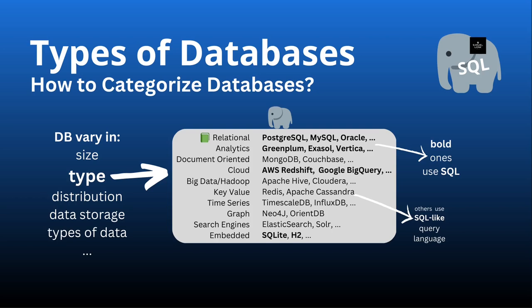What's more important to you at the moment — because this classification can obviously vary depending on who you ask — is that the ones in bold letters here are examples of databases that use SQL, which you are going to learn in this course. Some others, like Apache Cassandra, use SQL-like query languages. Because relational databases and SQL have been around for a while, SQL is a required skill, and that's why we're learning it in this course.